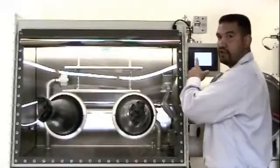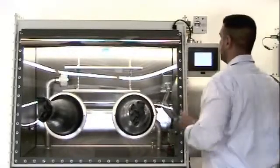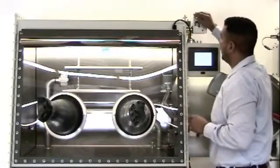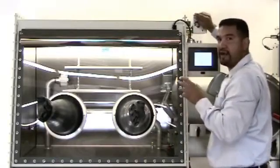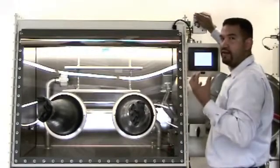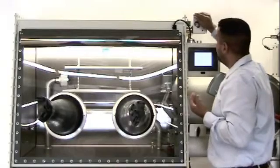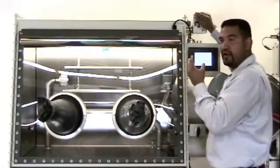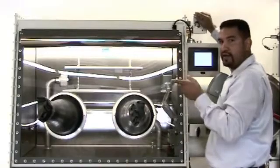Once the oxygen readings have stabilized, adjust your span potentiometer to 20.9 percent, which is the amount of oxygen in the air that we breathe. Turning the span potentiometer clockwise increases, whereas counterclockwise decreases.